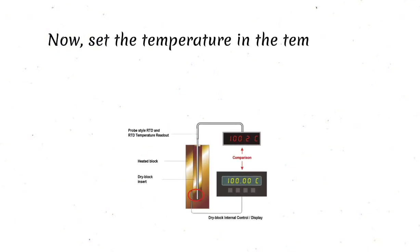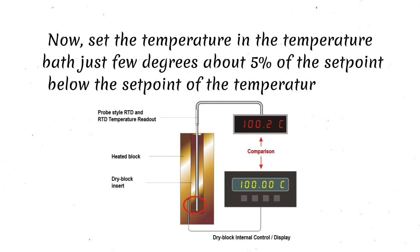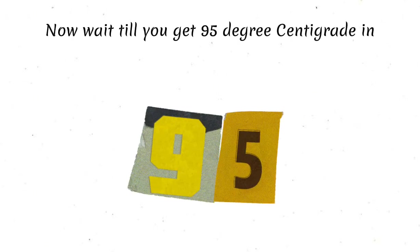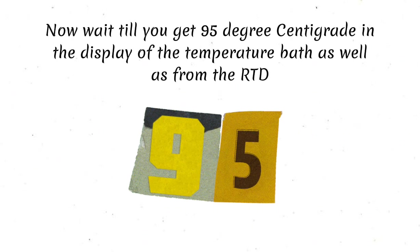Now, set the temperature in the temperature bath just a few degrees, about 5% of the setpoint, below the setpoint of the temperature switch. Now, wait till you get 95 degrees centigrade in the display of the temperature bath, as well as from the RTD.